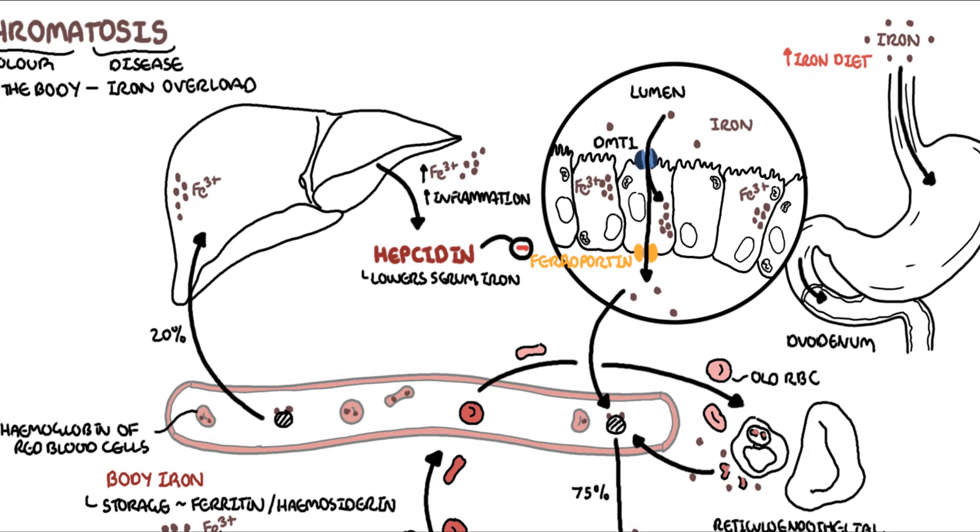Secondly, you can have mutations in certain transporters such as ferroportin. When you have mutation in ferroportin, you can have excess ferroportin, and when you have excess ferroportin, all this iron can get into circulation.